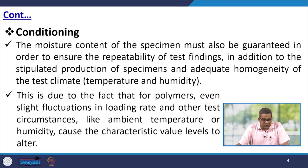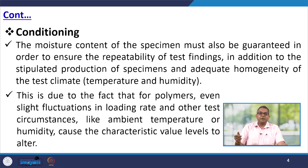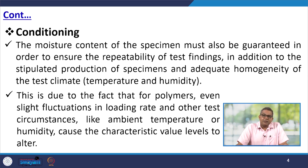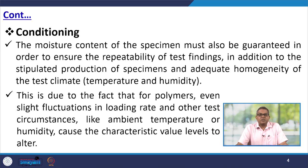Now let us talk about the conditioning. The moisture content of the specimen must also be guaranteed in order to ensure the repeatability of the test findings, because reproducibility of data is quite essential. In addition, adequate homogeneity of the test climate is quite essential, because even slight fluctuations in loading rate and other test circumstances like ambient temperature or humidity may cause the characteristic value level to alter.